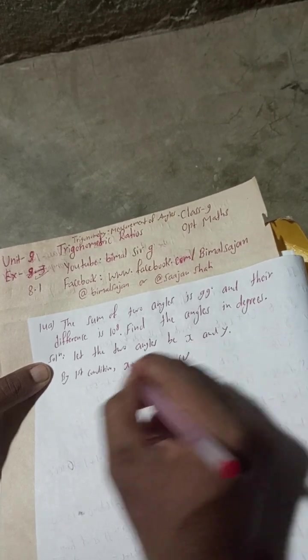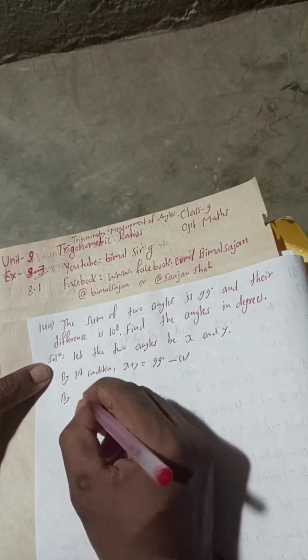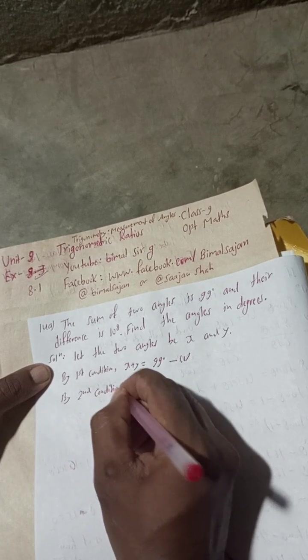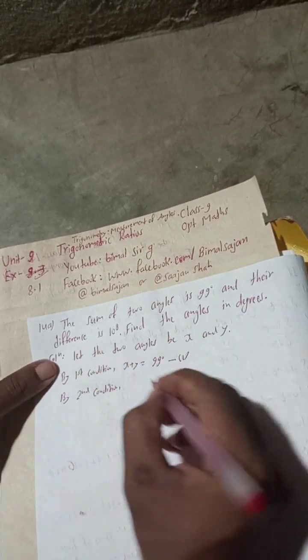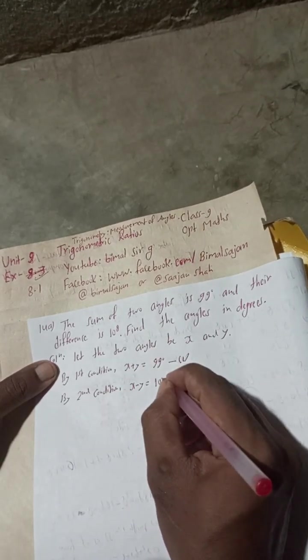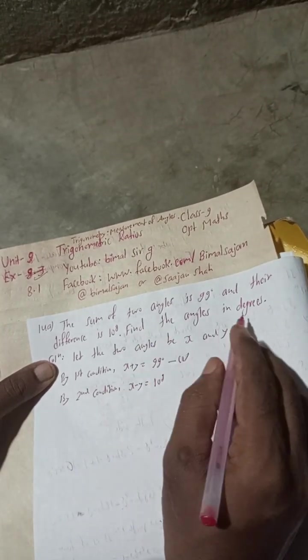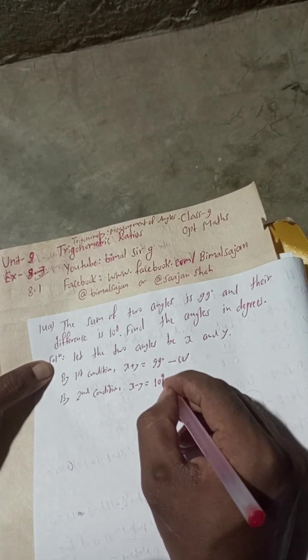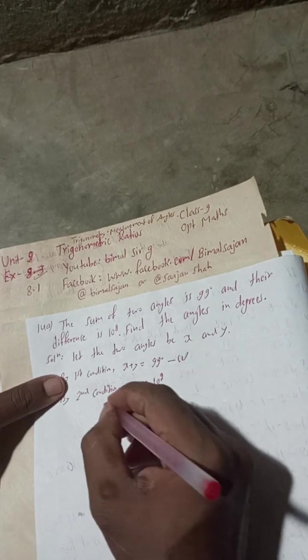By second condition, their difference, x minus y, is equal to 10 grade. Find the angles in degree. We have to find in degree, so change this 10 grade into degree.